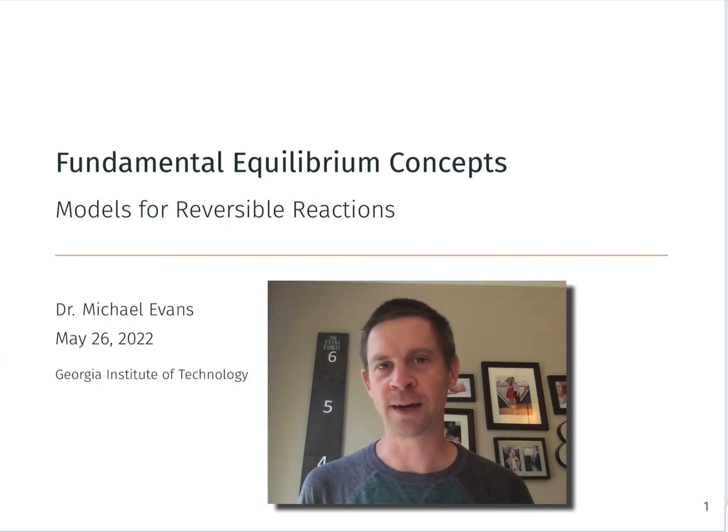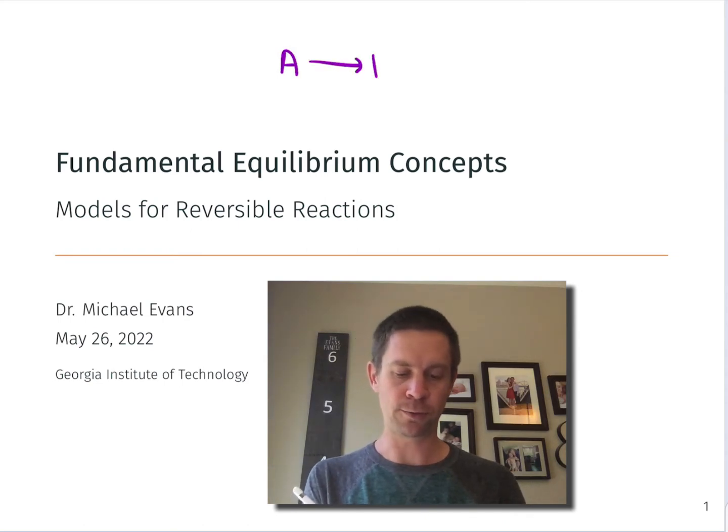So far in thinking about chemical reactions, we've focused on situations where only the forward reaction matters. Reactant A, for example, going to product B. We didn't worry at all about the conversion of B back to reactant A. And this is a very common situation in chemical reactions.